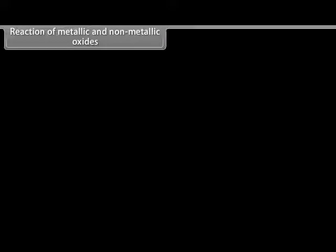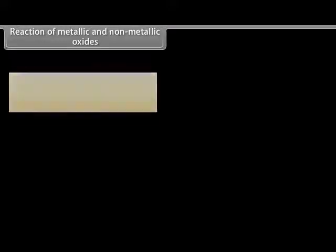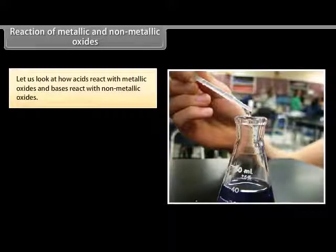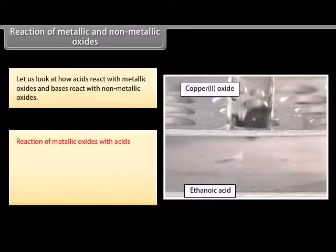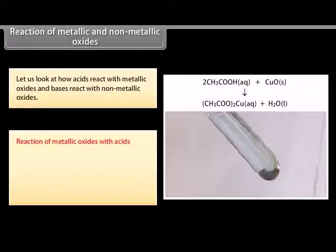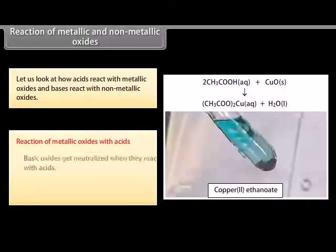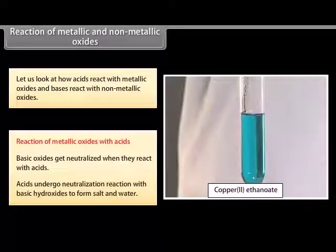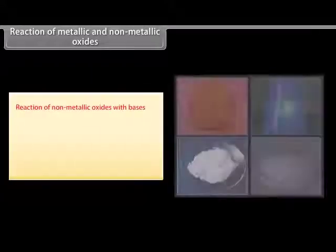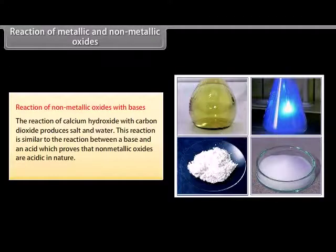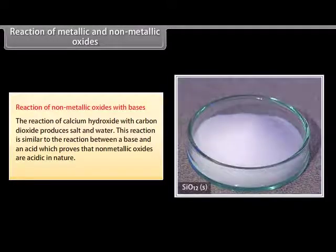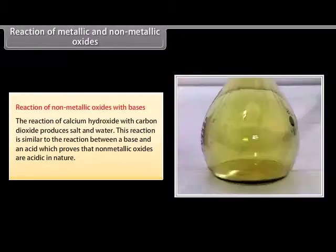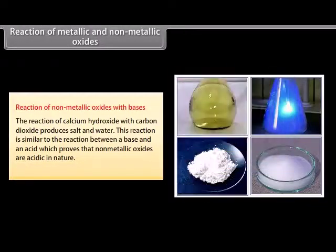Now let us look at how acids react with metallic oxides and how bases react with non-metallic oxides. Oxides that add hydroxyl ions to their molecules are called basic oxides; these get neutralized when they react with acids, forming salt and water. The reaction of calcium hydroxide with carbon dioxide produces salt and water, similar to the reaction between a base and an acid. This proves that non-metallic oxides are acidic in nature.